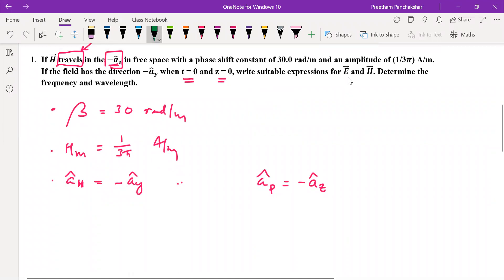Let us see. Let us go for E. But before that, we shall easily write for H. Information is given for H. H vector is equal to amplitude. Amplitude is given as 1 by 3π.